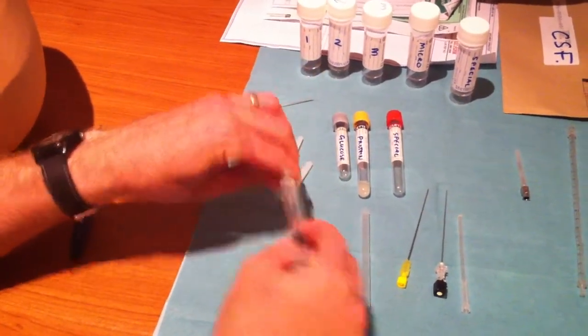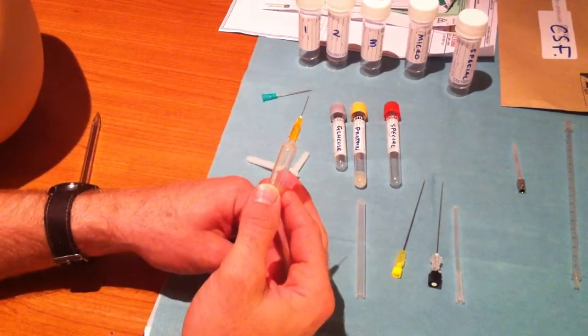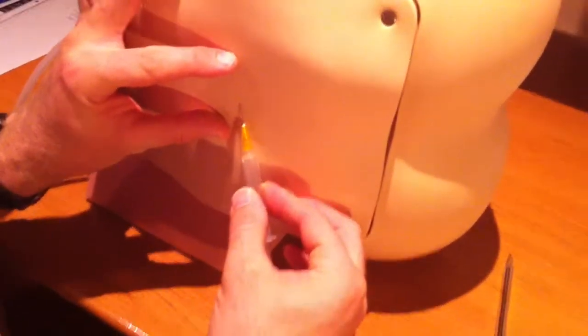You'll then need a shorter needle to produce your subdermal bleb. A subdermal bleb is a way of rapidly anaesthetising the skin.